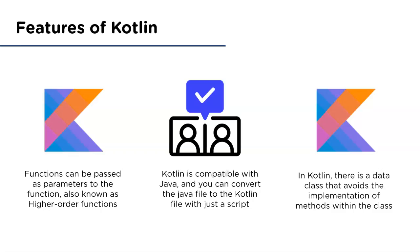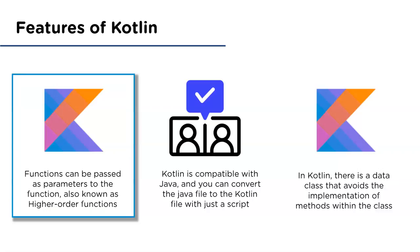Another feature of Kotlin is that functions can be passed as parameters to other functions — meaning a function acts like a variable and can be passed just like one. This is also known as a higher-order function, whose functionality is to take functions as parameters and to return a function.